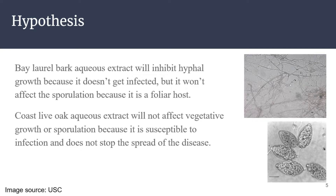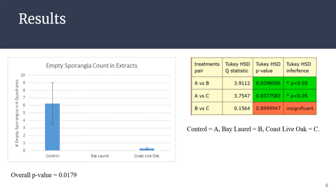The hypothesis going into this experiment was that because bay laurel trees don't get infected, the bay laurel tannin — which we obtain from an aqueous extract by boiling the bark in water for a few hours — will inhibit hyphal growth, but we don't expect it to have any impact on sporulation because the bay laurel tree is a foliar host. We also expected that the coast live oak aqueous tannin extract would not affect vegetative growth, since these trees do get infected and die, and would not affect sporulation either, since P. remorum quite readily spreads from tan oak to tan oak.